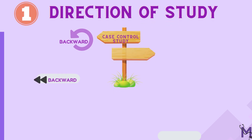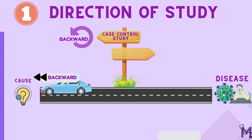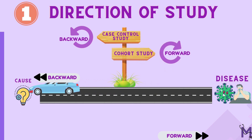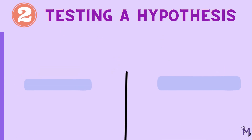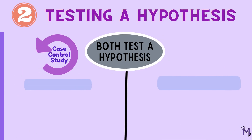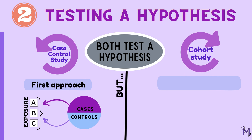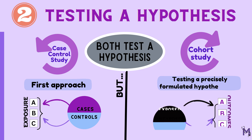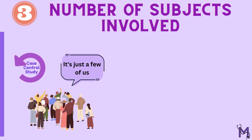Firstly, it's differentiated based on the direction of the study. A case-control study is a backward study proceeding from disease to cause, while a cohort study is a forward study proceeding from cause to disease. Though both test a hypothesis, a case-control study is the first approach to test a hypothesis, while a cohort study is reserved for testing a precisely formulated hypothesis only.